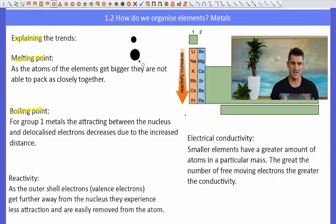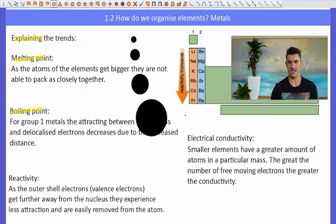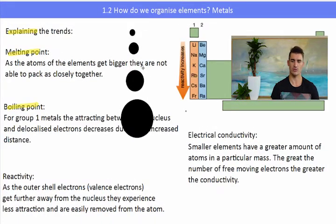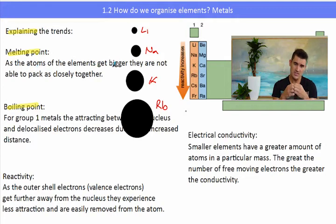Well for the melting point we simply look at the size of the atoms. Now as the atoms get bigger they can't pack as closely together. So you can see here I have drawn a couple of little circles to try and illustrate the atomic radius, the size of these group 1 atoms. So lithium is the smallest and rubidium would be the biggest. And if you think of these as little spheres then lithium can get a lot closer together than rubidium. So what is happening is lithium can pack more closely together and it is harder to break apart.